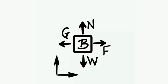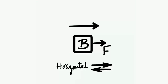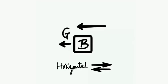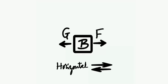Starting with the analysis, we first take the horizontal forces that act on this body — those are F and G. These forces are acting in directions opposite to each other, hence the net resultant force along the horizontal, Rx, will be equal to the difference of F and G.